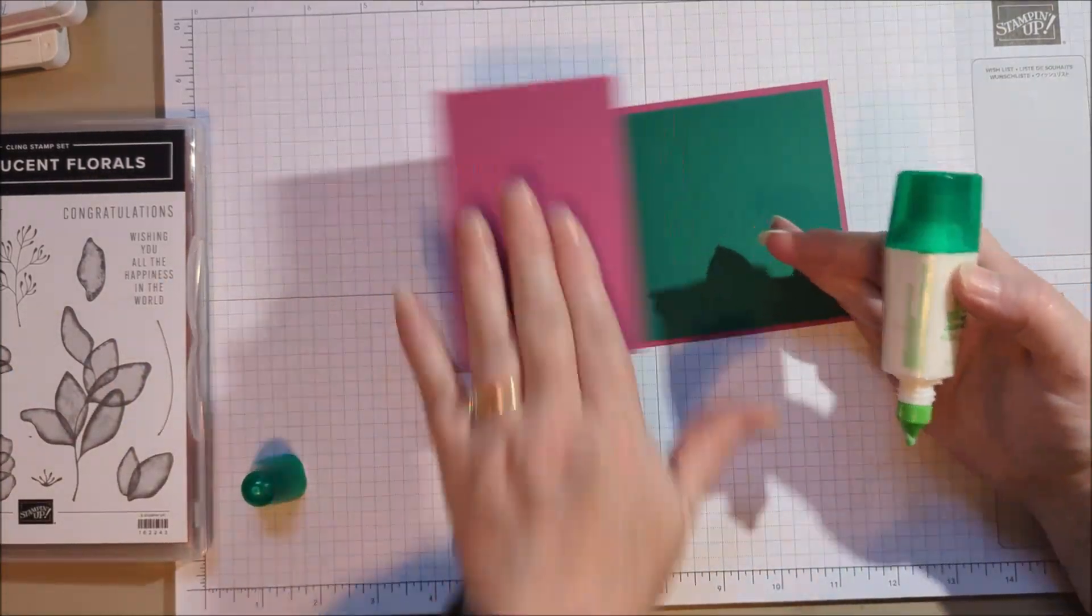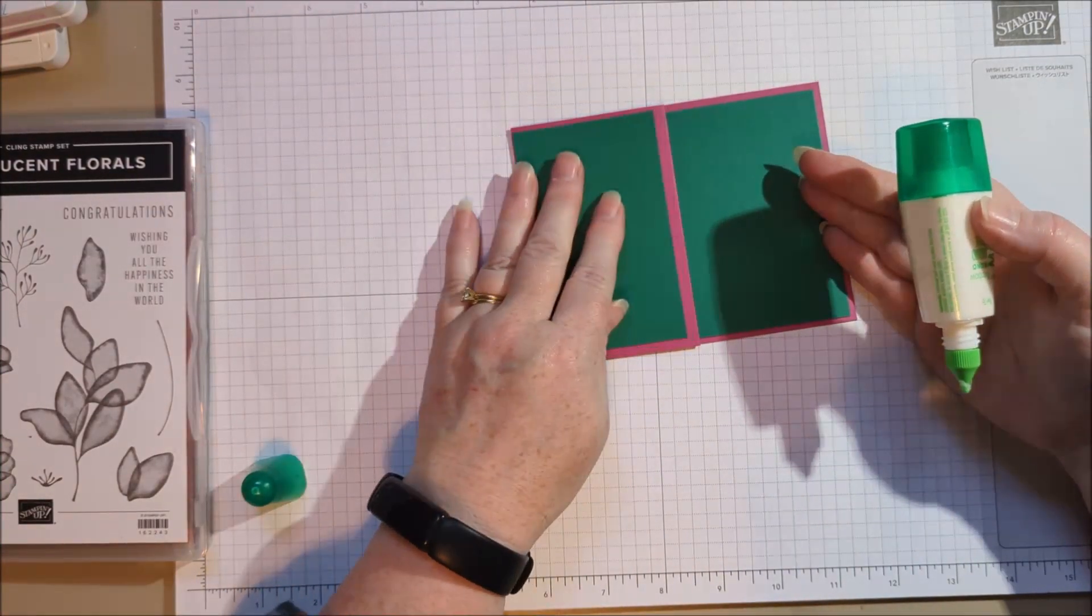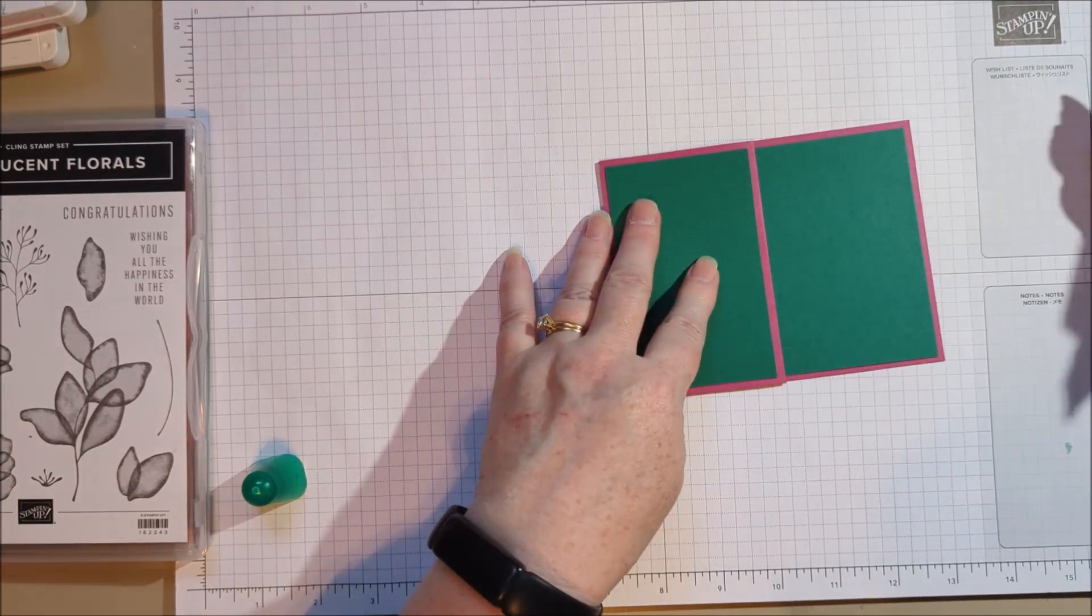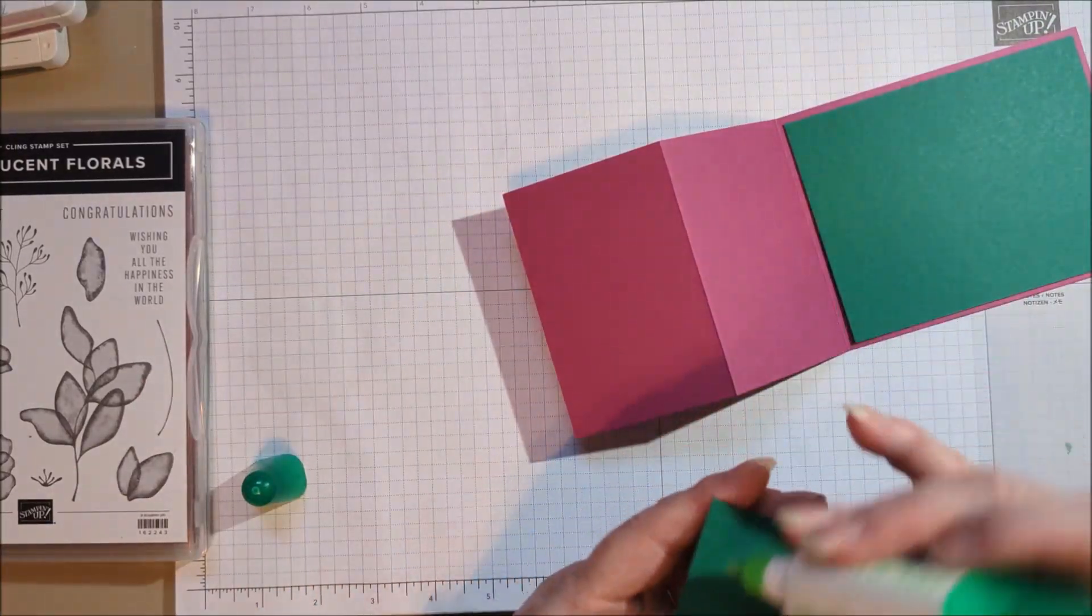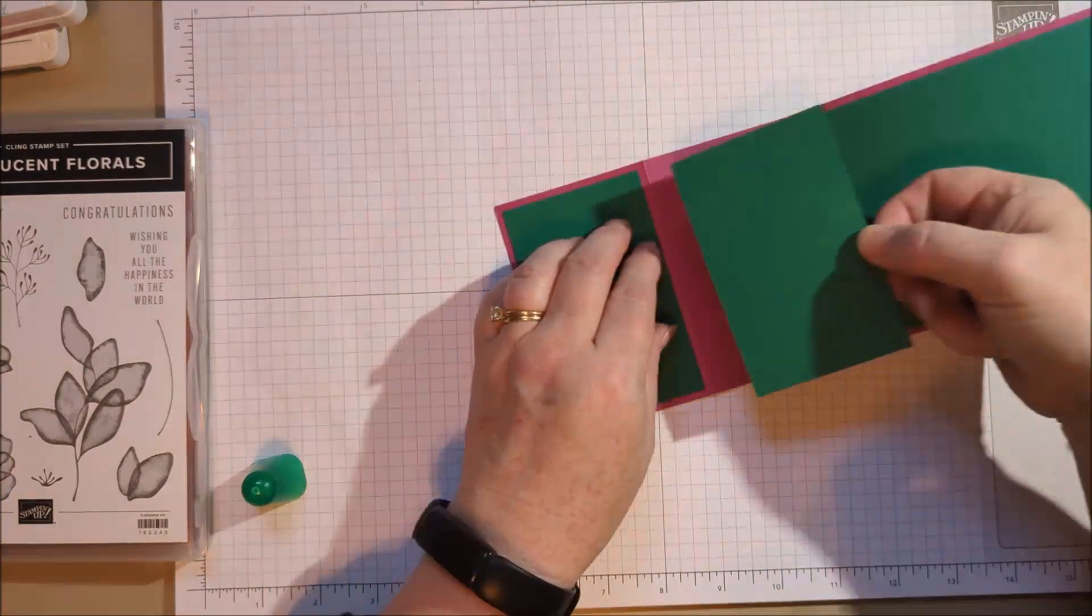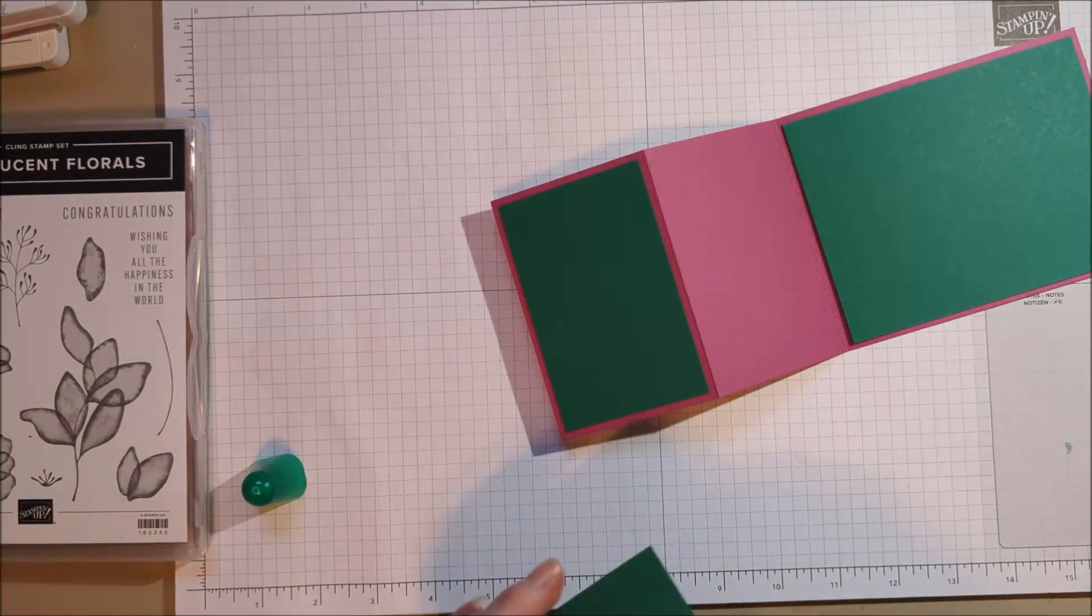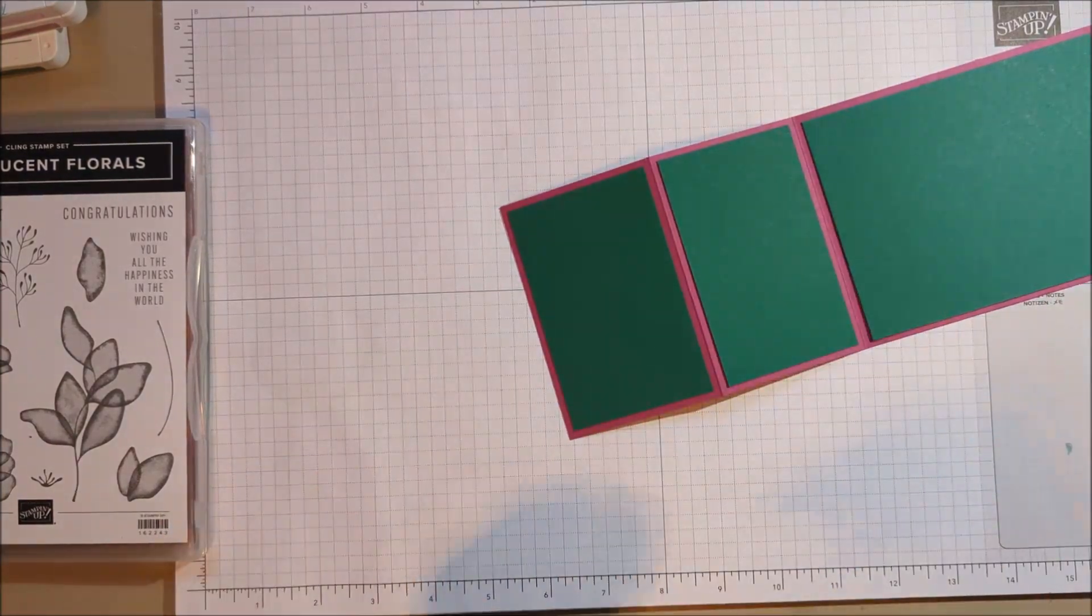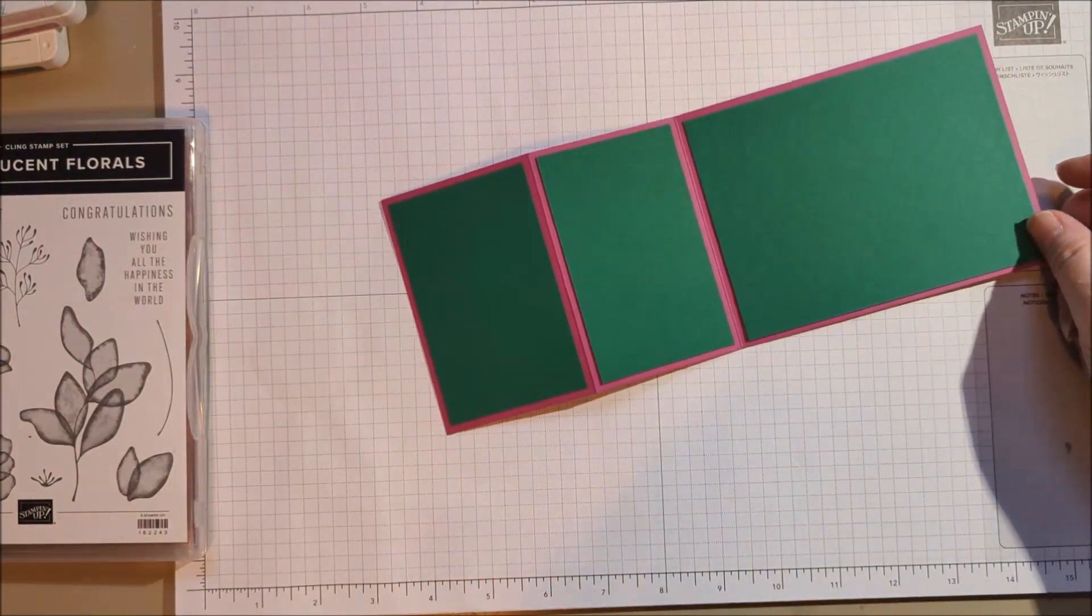So this piece is going to be a layering piece. So we just cut it four by five and a quarter, and it's just going to go down right there. I'm going to go ahead and put it down so that I have less pieces floating around on my desk. Now I've got another piece of shaded spruce that's going to go right here. And this one is cut at two and a half by four.